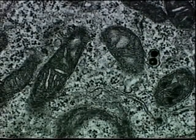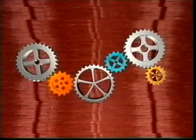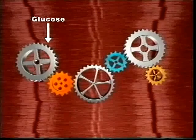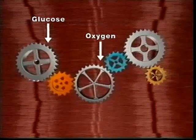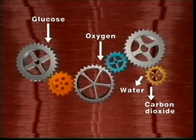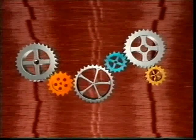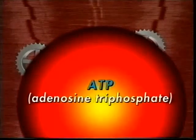Enzymes in the mitochondrion control a series of chemical reactions, during which nutrients like glucose are progressively broken down. In the final stages, oxygen is added. The waste products are water and carbon dioxide, but the main product is energy, and it's captured and stored until it's needed in the form of a molecule known as ATP. This whole process is called cellular respiration.